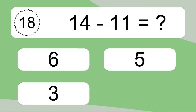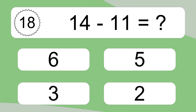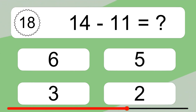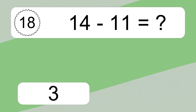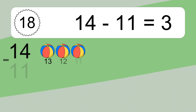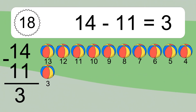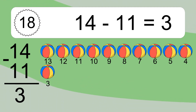14 minus 11 equals what? 14 minus 11 equals 3. Let's count it: 13, 12, 11, 10, 9, 8, 7, 6, 5, 4, 3.